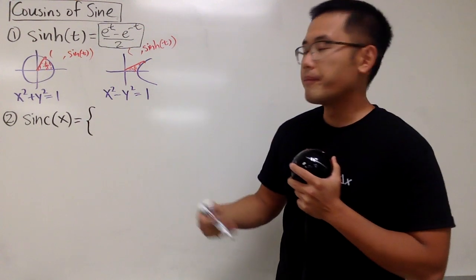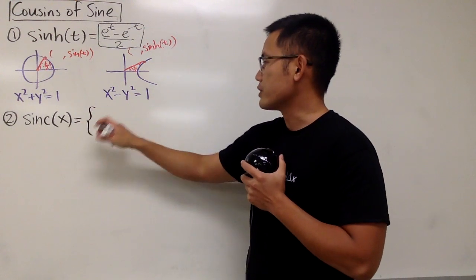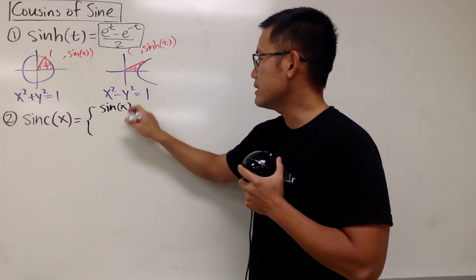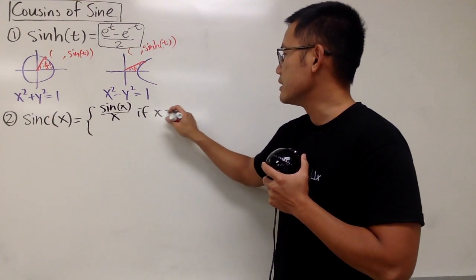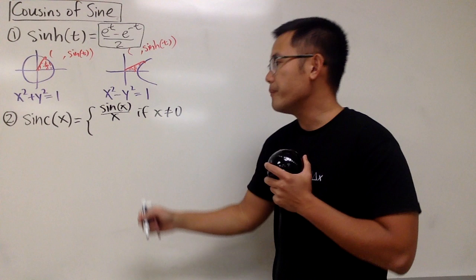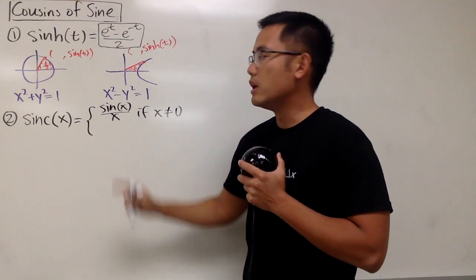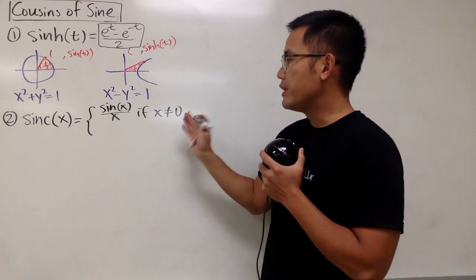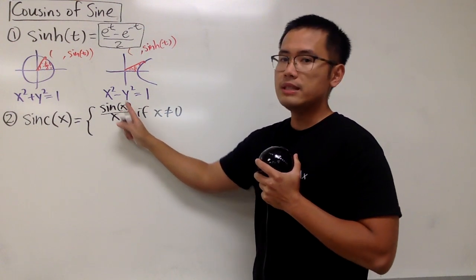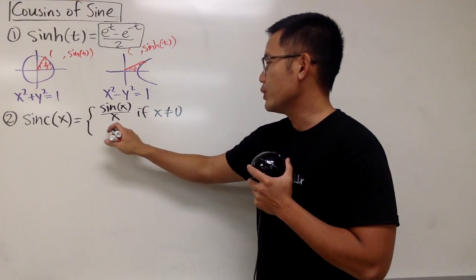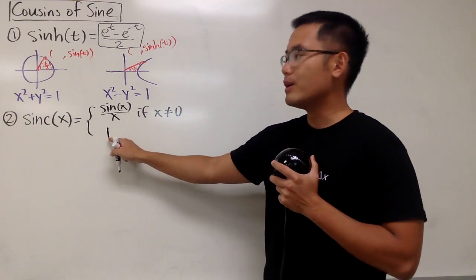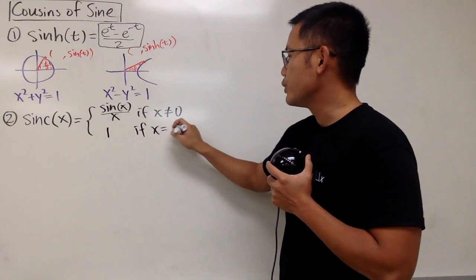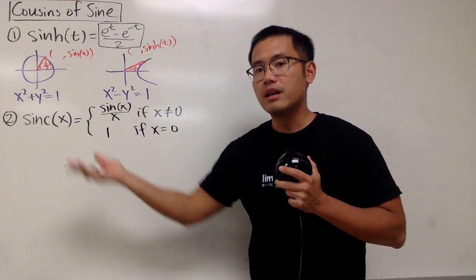This is a piecewise definition for the function. The first piece: you look at the regular sine, input is x, and you divide it by x, if x is not equal to 0. However, if x equals 0, this is not defined because you have 0 in the denominator. But if you take the limit as x approaches 0, you see that this approaches 1. We just take 1 — which is the limit — to be the value when x is exactly equal to 0.